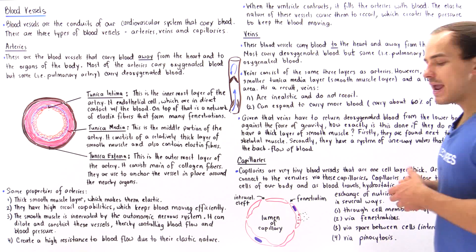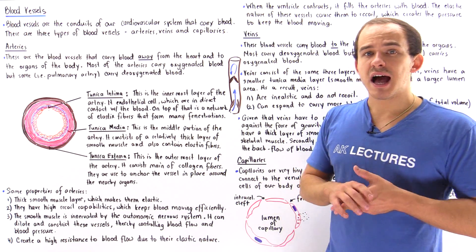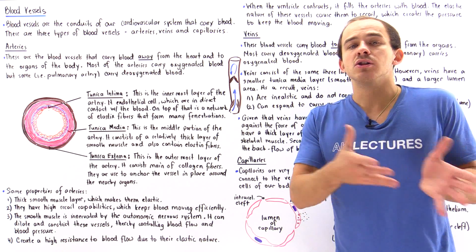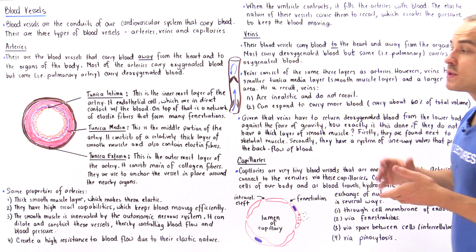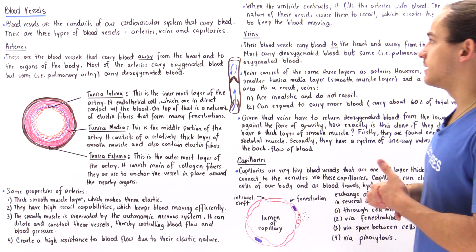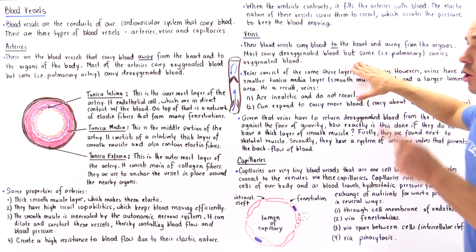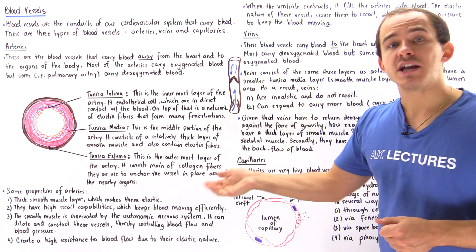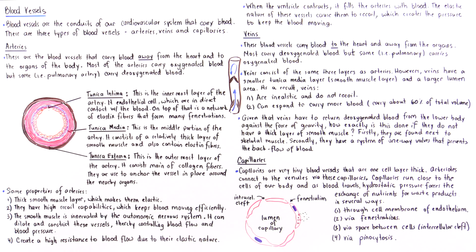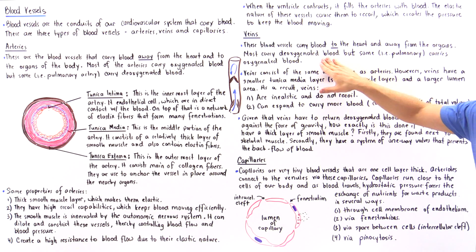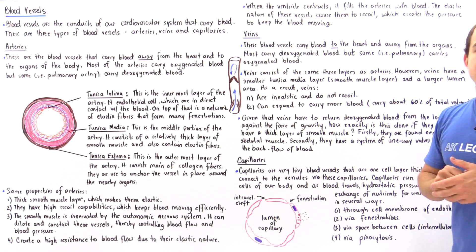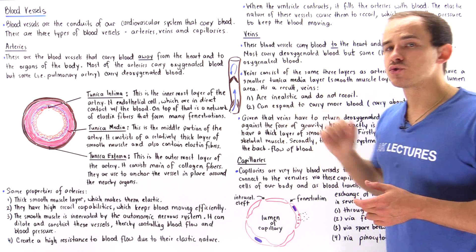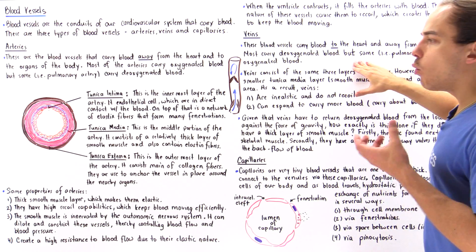Now what about our veins? Just like arteries, veins also come in different sizes. The smallest vein is called a venule and the largest vein in our body is called the vena cava — we have two: the inferior and the superior vena cava. If arteries carry blood away from the heart, then veins always carry blood to the heart, away from the cells, tissues and organs. Most of the time veins carry deoxygenated blood, but the left and right pulmonary veins carry oxygenated blood to the left atrium.